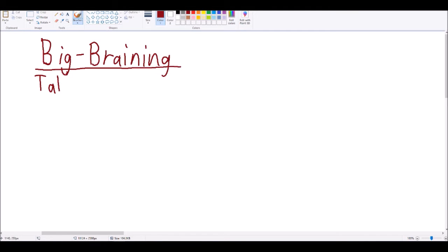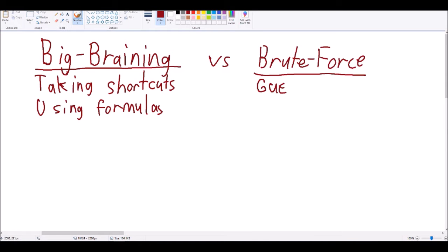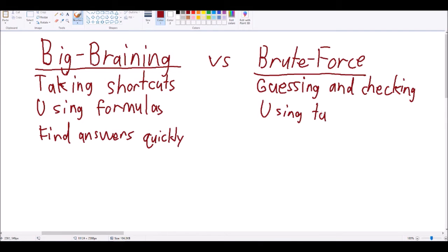So first, we need to make a definition. I'm defining big-braining as where you take shortcuts and formulas to find an answer. I call it big-braining because you're able to find answers super fast!